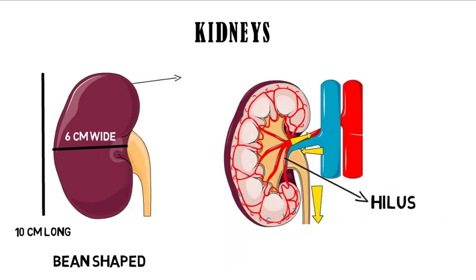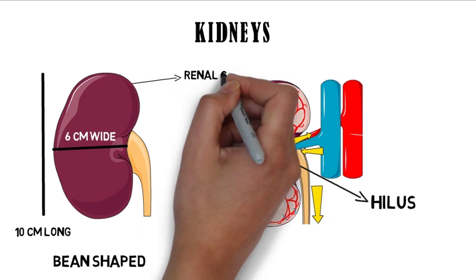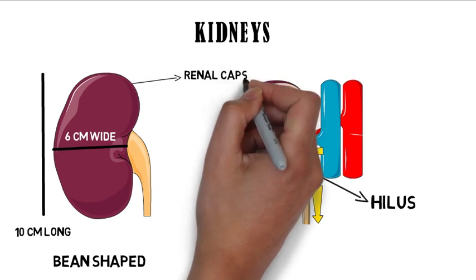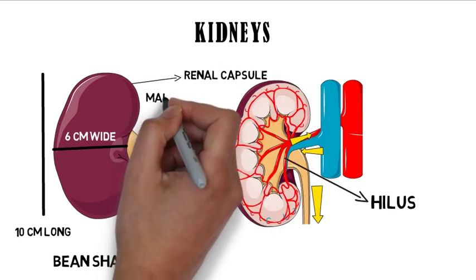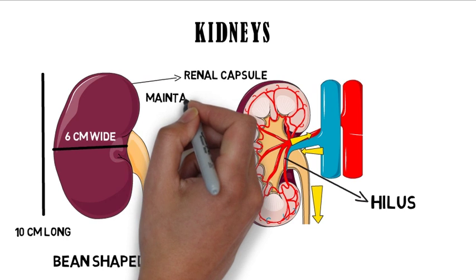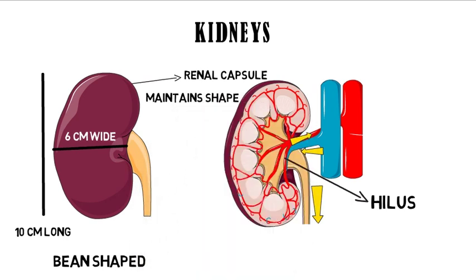Each kidney is covered by a tough renal capsule, which is a smooth, transparent, and fibrous membrane that surrounds and protects the kidneys. The renal capsule helps to maintain the kidney shape.